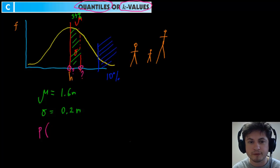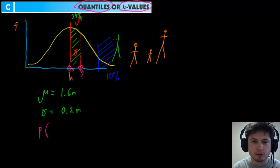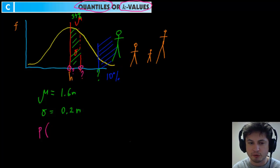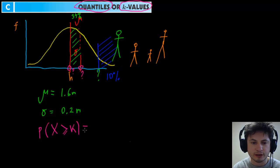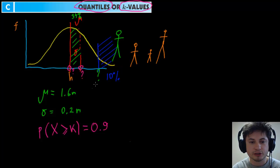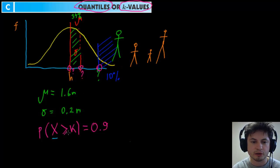We're looking for those super tall students in the top 10 percentile and we want to find that cutoff value K. The notation we write is: P(X ≥ K) = 0.9. That 0.9 comes from 100% minus 10%, which gives 90% or 0.9. So all values of X that are greater than or equal to K represent that top 10 percent, and our K value here is 0.9.